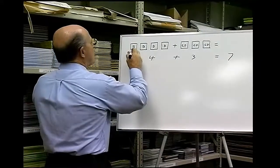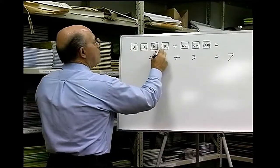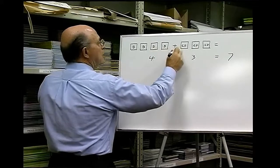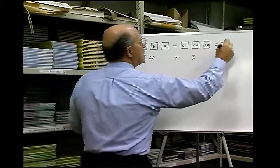And the same is here. We get one, two, three, four, plus three is five, six, seven.